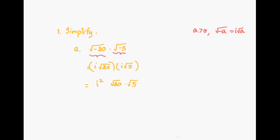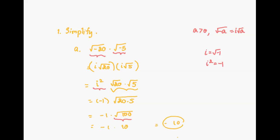By definition of the imaginary number, since i is the square root of negative one, i squared equals negative one. Therefore, i squared is replaced with negative one, and the square root of 20 times square root of 5 can be written as the square root of 100. Simplified further, we have negative one multiplied by the square root of 100, and square root of 100 simplifies to 10. So we obtain the value negative one times 10, which is negative 10.